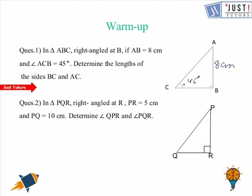We know that AB is equal to 8 cm and angle ACB is equal to 45 degrees. Now we need to work out the rest of the sides. We apply the ratio of sine theta, and we can work out that the hypotenuse AC will be equal to 8√2 cm. Then using Pythagoras theorem, the base CB will be equal to 8 cm.